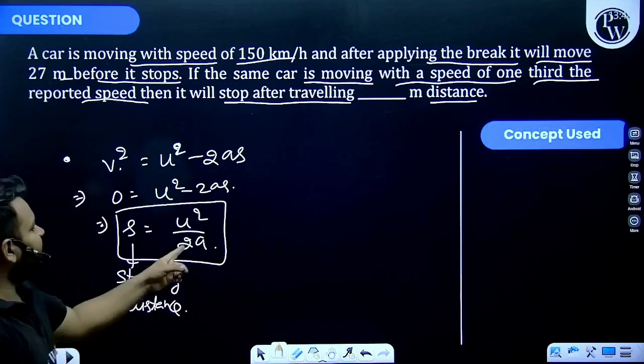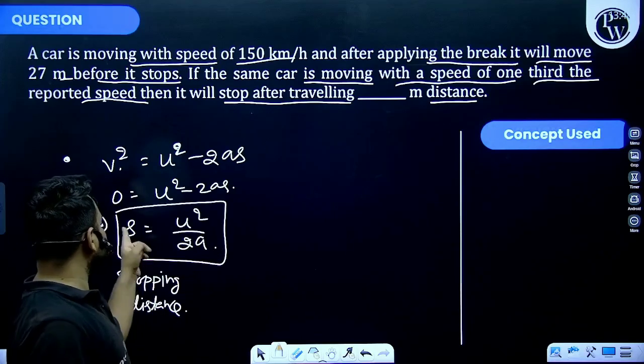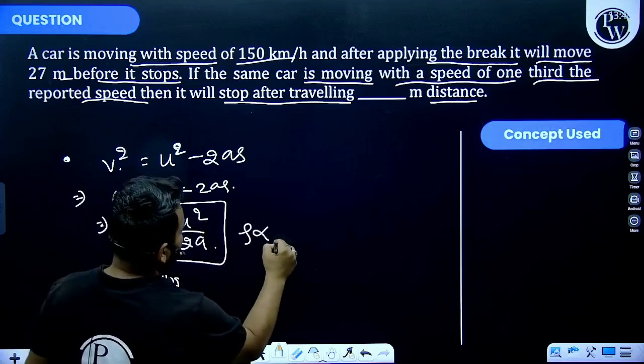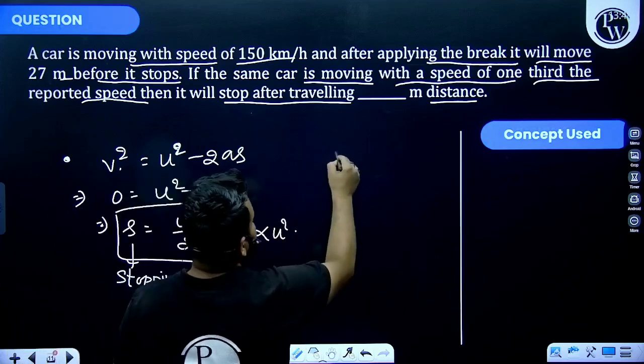If acceleration is constant, you can say the stopping distance is directly proportional to u². That means the stopping distance is directly proportional to the square of initial velocity.